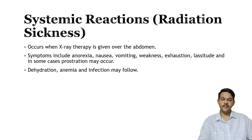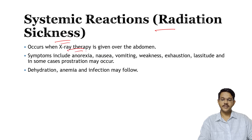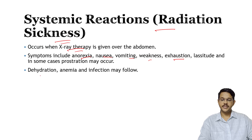Systemic reaction, also called radiation sickness, occurs when systemic effects are seen — such as when x-ray therapy is given to the abdomen. Symptoms include anorexia, nausea, vomiting, weakness, exhaustion, lassitude, and sometimes prostration. Cases of dehydration, anemia, and infection may also follow in cases of radiation sickness.